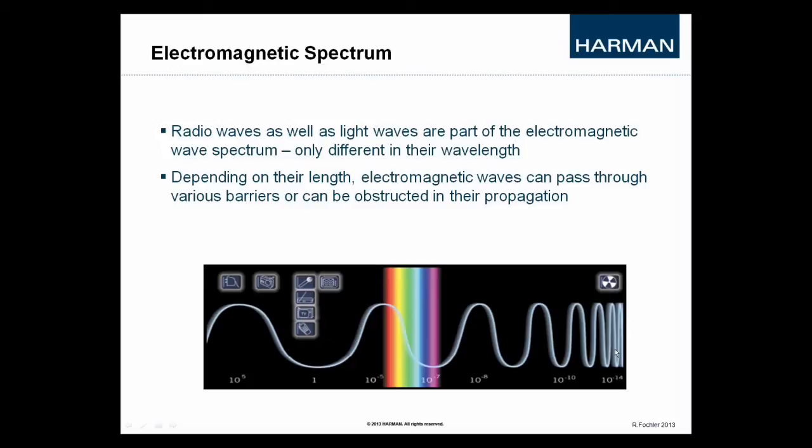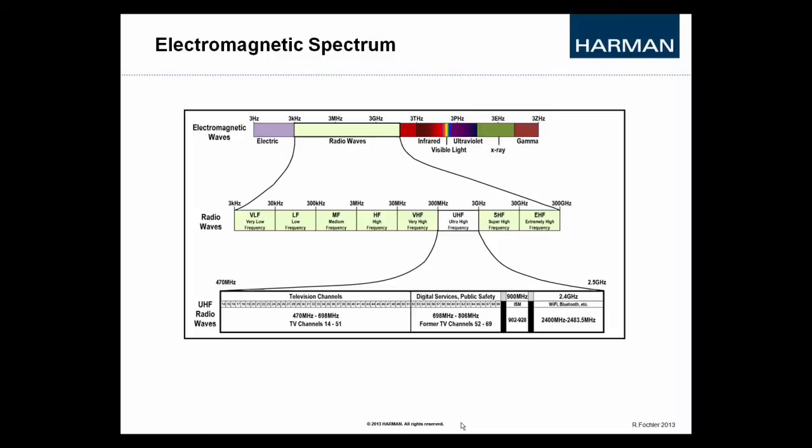So, important to know is that radio waves as well as light waves are part of the electromagnetic wave spectrum. They only differ in their wavelengths. If we convert the previous illustration to the bar on top here, we will find the same zones and divisions like before. Our interest is the range of the entire electromagnetic spectrum that is usable for wireless devices, and it is determined as radio wave spectrum.